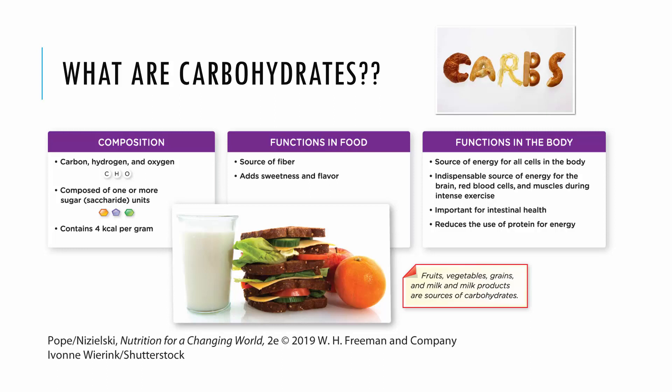In this chapter, we'll learn a little bit about what carbohydrates really are and how they affect our body. Carbs are made up of carbon, hydrogen, and oxygen. They consist of one or more sugar units or saccharide units put together. They contain four calories per gram, are a source of fiber in food, and add sweetness, flavor, and satisfaction to our food. In the body, they're our primary source of energy for all of our cells.